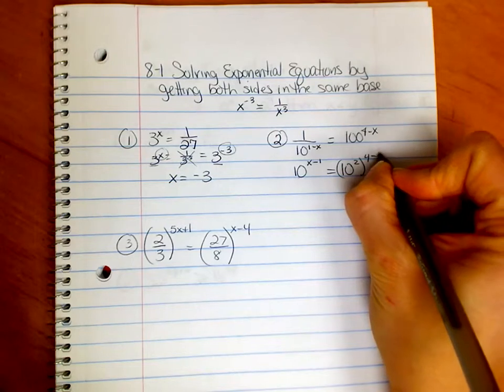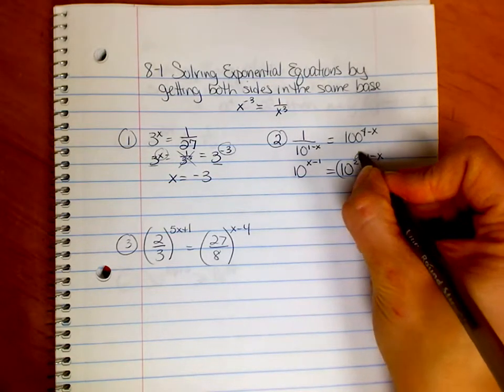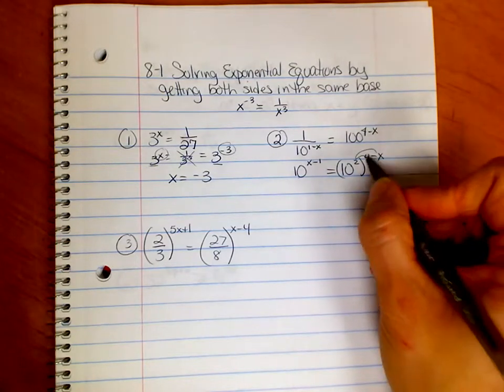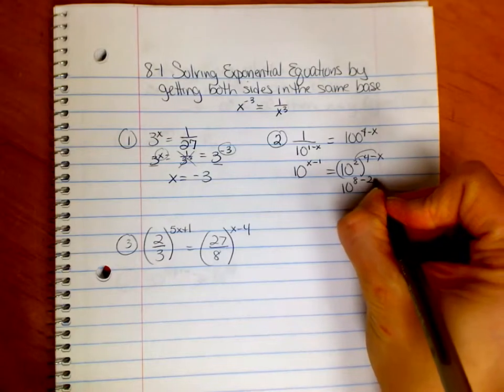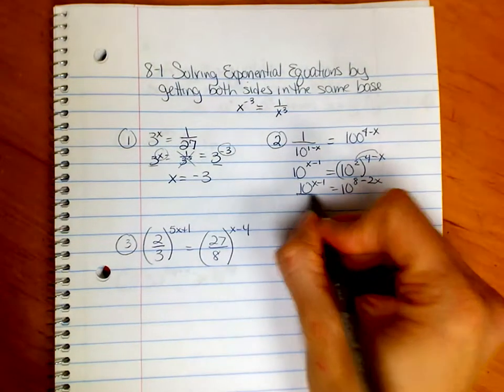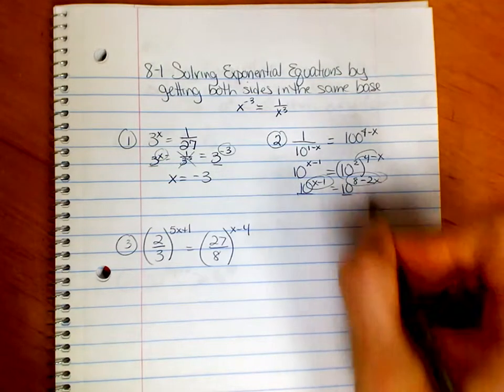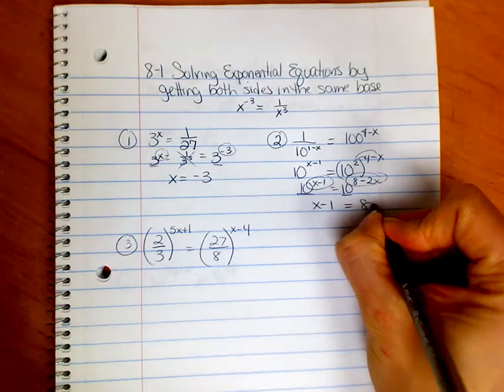So now, this is what I have. And if I use my rule of powers of powers, which means I multiply, I'm going to get 10 to the 8 minus 2x equals 10 to the x minus 1. Once the bases are the same, my rule says I can set exponents equal to each other. So x minus 1 equals 8 minus 2x.